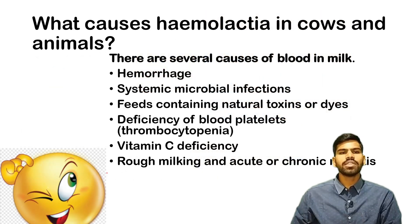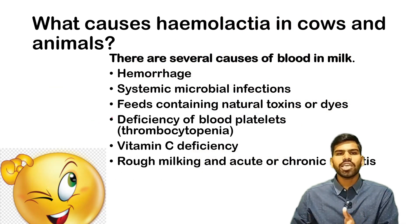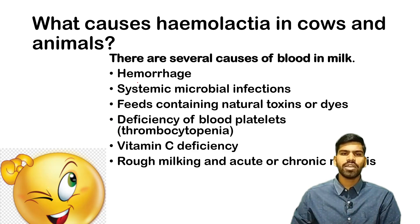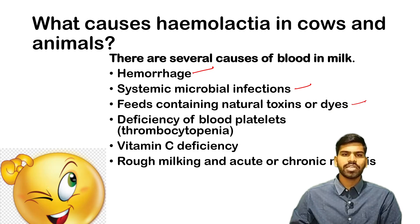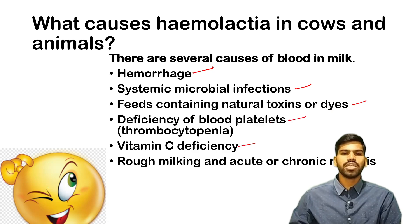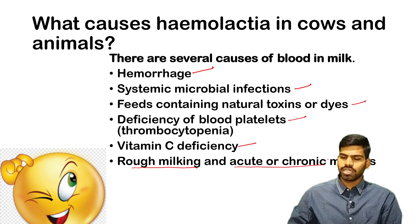What causes Hemolactia? There are several different causes of blood in milk. The first one being Hemorrhage, systemic microbial infections, feeds containing natural toxins and dyes, deficiency of blood platelets, vitamin C deficiency, and also due to rough milking and acute or chronic mastitis disease.